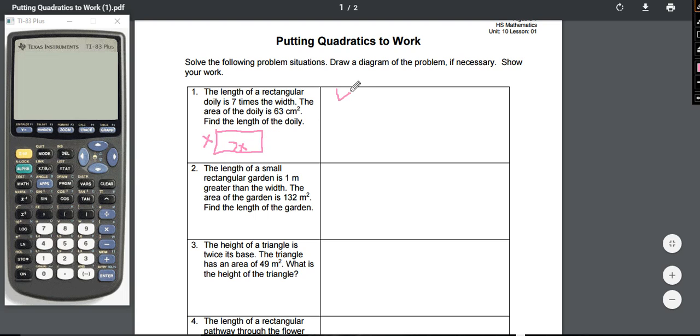We know that the length times the width is equal to the area of a rectangle. We have that x times 7x is equal to 63 centimeters squared. We're going to start by clearing parentheses and setting this equal to zero. So x times 7x would be 7x squared.